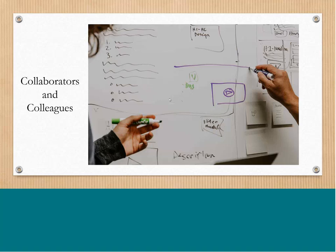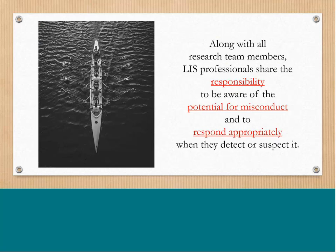Along with all research team members, we share the responsibility for promoting research integrity. We shouldn't appoint ourselves research police, but rather embrace the opportunity and responsibility to act as agents of integrity. We share the responsibility to be aware of the potential for misconduct and to respond when we spot or suspect it. The National Academies demands vigilance, professionalism, and collegiality in the pursuit of research integrity. Here I'm emphasizing vigilance, and in a few minutes I'll say more about professionalism and collegiality.